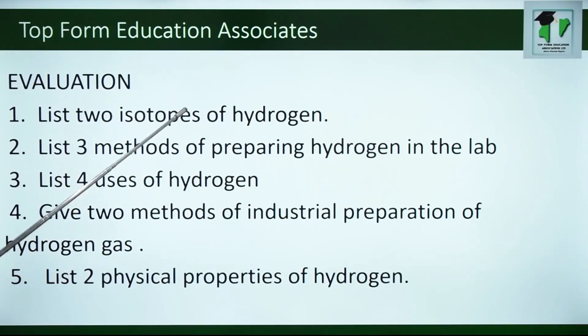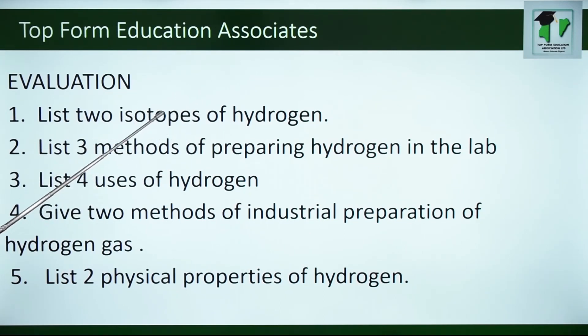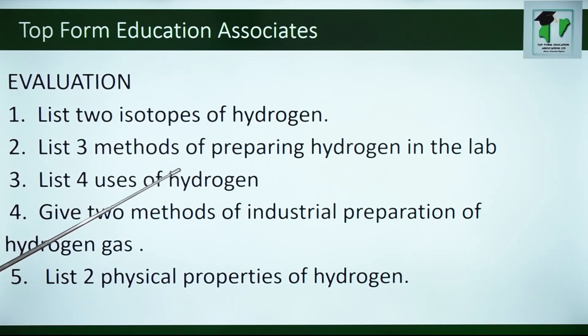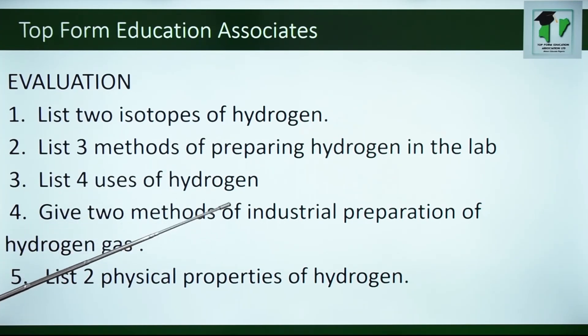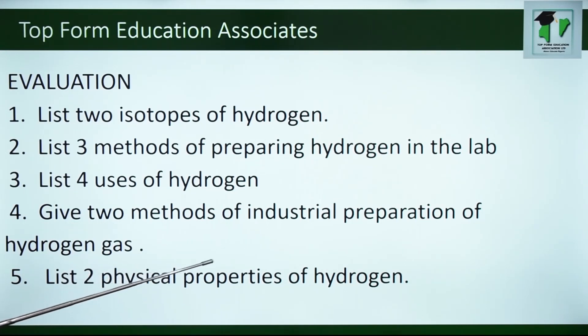Evaluation. We have learnt what isotopes are and the different isotopes of hydrogen. We can list isotopes of hydrogen, mention three chemical methods of preparing hydrogen in the lab, list the uses of hydrogen, give two methods of industrial preparation of hydrogen gas, and list the physical properties of hydrogen gas. We have come to the end of our lesson. After evaluating yourself, you can now describe hydrogen, its occurrence, its isotopes, the physical and chemical properties, and lastly the uses. Thank you for listening.